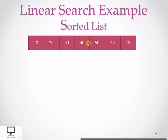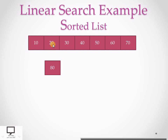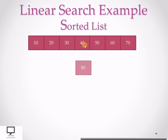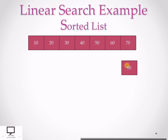For the same sorted list, searching for 80: compare one by one — it is seen that 80 is not present. When we compare 80 with the last element and it is not equal, all values in the data set are exhausted and no comparison shows 80 is equal to any element in the data set. The search is unsuccessful.